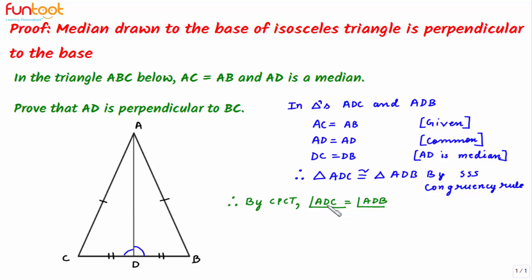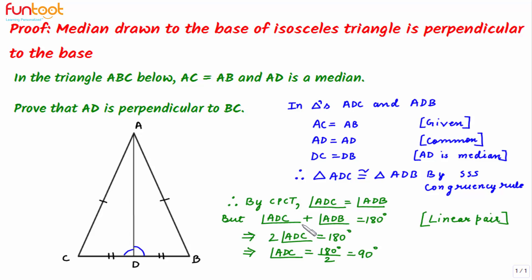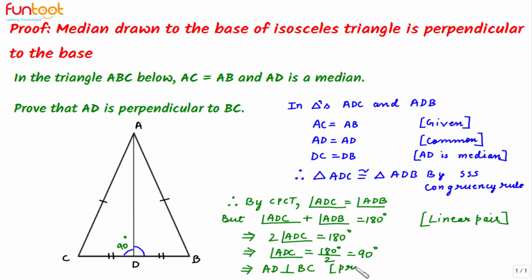By CPCT, angle ADC equals angle ADB. But angle ADC plus angle ADB equals 180 degrees, as they form a linear pair. Since the two angles are equal, this implies twice angle ADC equals 180 degrees, so angle ADC equals 90 degrees. Therefore, median AD is perpendicular to base BC, which is what we had to prove.